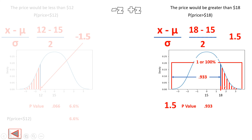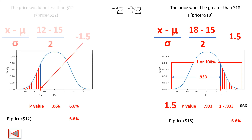To find the area of the shaded region to the right, we subtract: 1 − 0.933 = 0.066. This is the probability of the price being greater than $18. So the probability of the price being greater than $18 is also 6.6%.